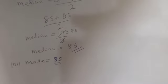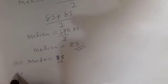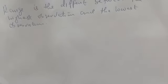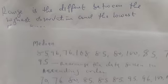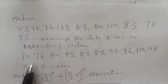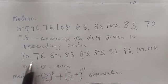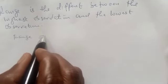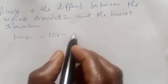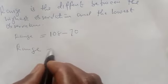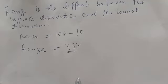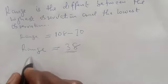The last is range. Range is defined as the difference between the highest observation and the lowest observation. The highest observation is 108 and the lowest is 70. Therefore range is equal to 108 minus 70, which is equal to 38. Please, if you've enjoyed the class, don't forget to like, share, comment and subscribe. Thank you.